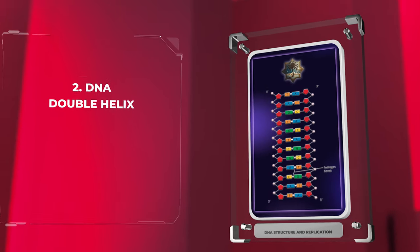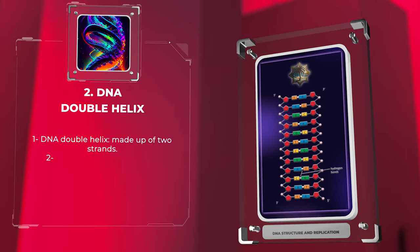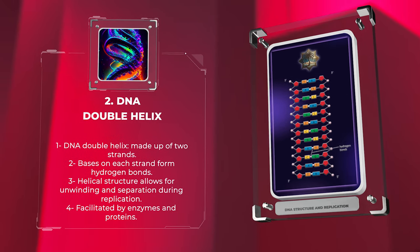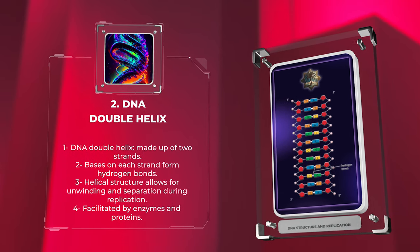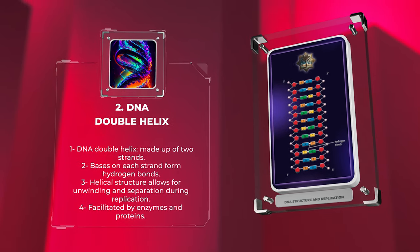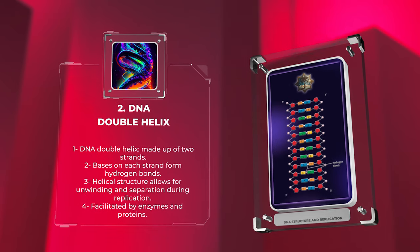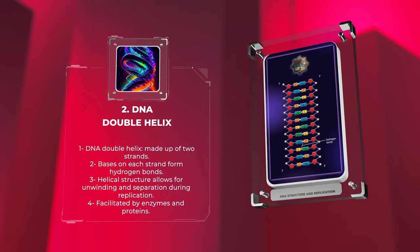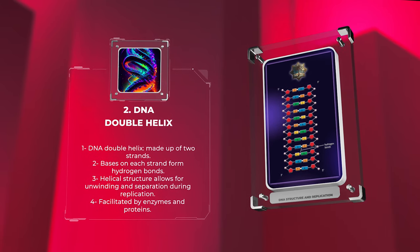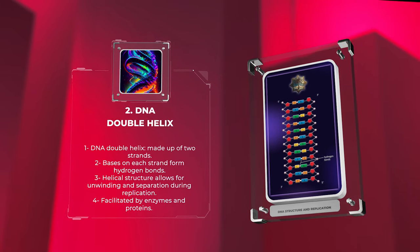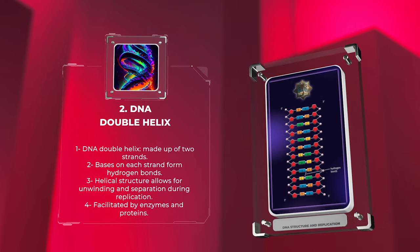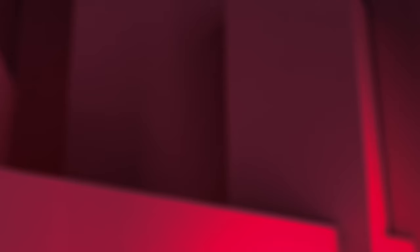The DNA double helix is a structure made up of two strands running in opposite directions. The bases on each strand face inward, forming hydrogen bonds that maintain the helical structure. This helical nature allows for the unwinding and separation of the strands during replication, which is facilitated by enzymes and proteins.